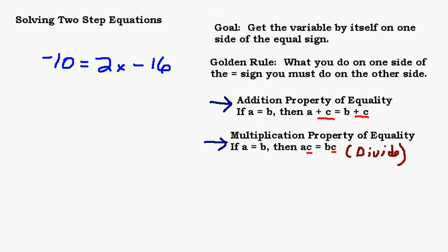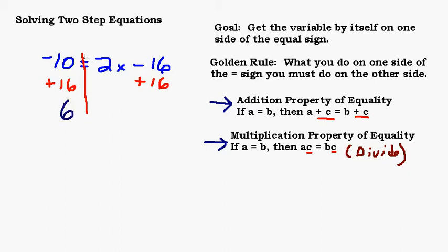Let's see how you did. Our goal is to get X by itself — this time the X is on the right-hand side. What's over there with that X? I've got a 2 that's multiplied by the X, and a 16 that's subtracted. So I need to do the addition property of equality first. Since this is a minus 16, I'm going to add 16 to make that go away. Since I'm adding 16 on the right-hand side, my golden rule says I have to add 16 on the left-hand side as well.